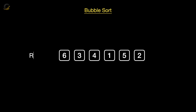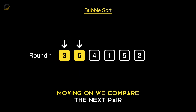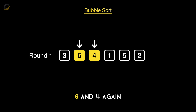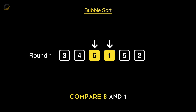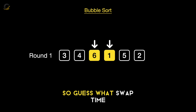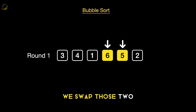We compare the first two numbers. 6 is greater than 3, so we swap them. Moving on, we compare the next pair: 6 and 4. Again, 6 is bigger, so let's swap. We keep going — compare 6 and 1. 6 is larger, so swap time. Next up, 6 and 5. We swap those two.